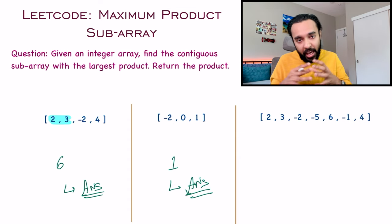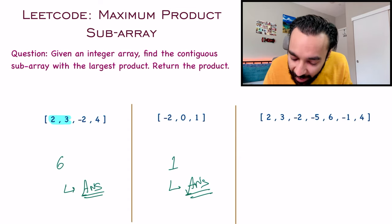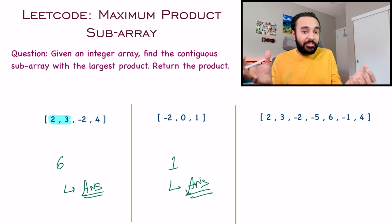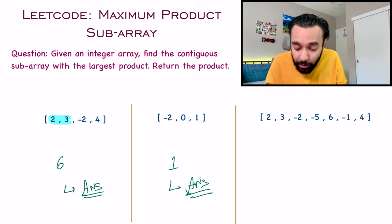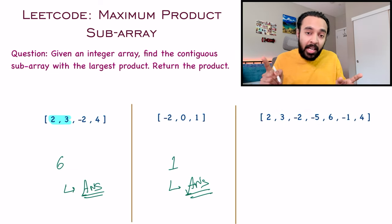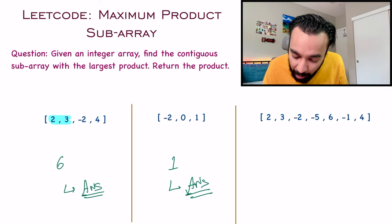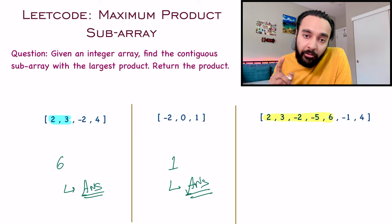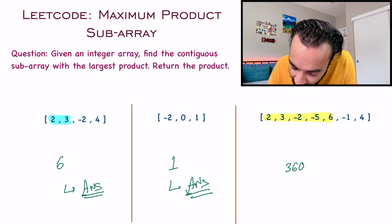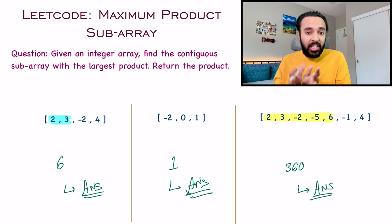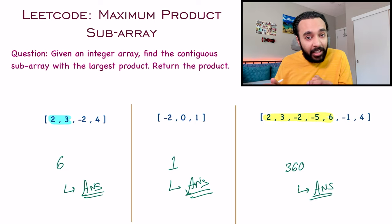We have one more test case that is more generic. I have an array that has 7 elements and in this particular test case you can see that it has a mix of positive and negative integers. So there can be a lot of different combinations of subarrays you can form. But the maximum product will be obtained when you select the subarray from 2 all the way up to 6, and once you multiply all of these you will get 360. So now, if you feel that you have understood the problem statement, first try it out on your own, otherwise let us dive into the solution.